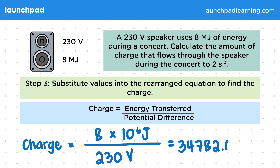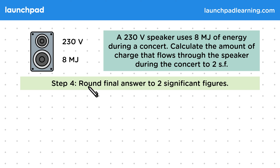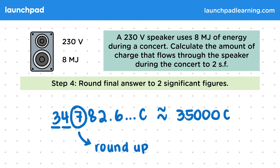That gives us 34,782.6 coulombs. For the final step, we round to two significant figures. The third significant figure is 7, so we round up, giving a final answer of 35,000 coulombs of charge that flows through the speaker during the concert.